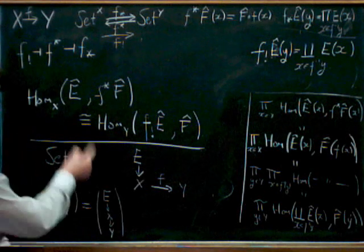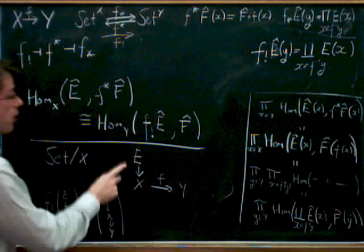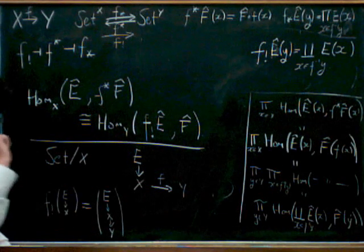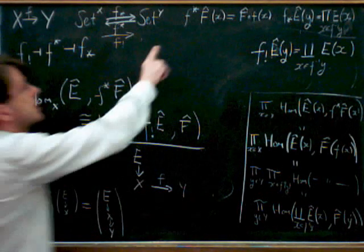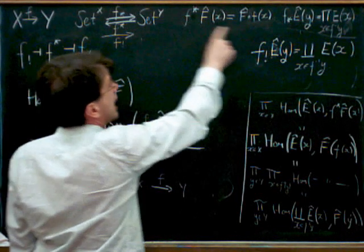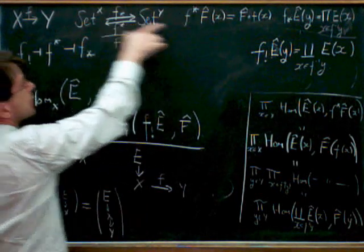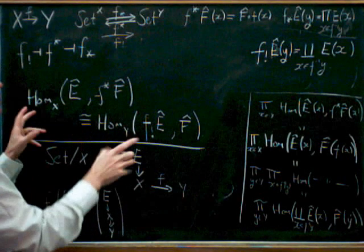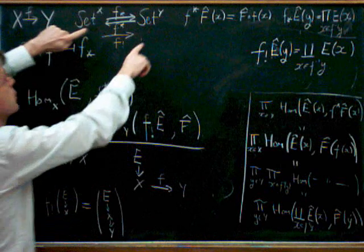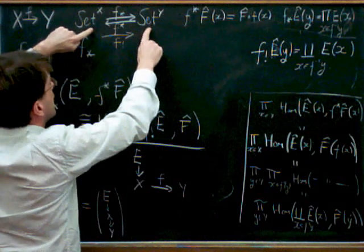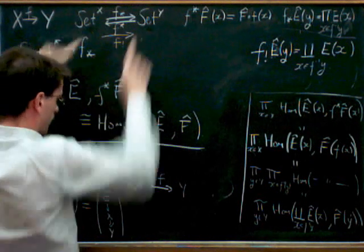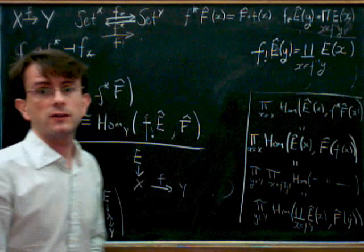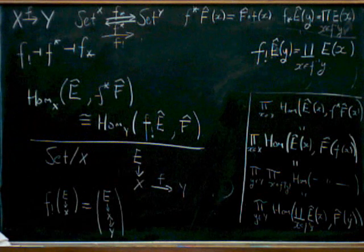So in this version of bundles where we look at maps rather than the fibers, the F shriek is just composition, which is slightly confusing because the pullback along F in this other way of describing them was got by composition. So you should be careful when you're talking about bundles, whether you're talking about them via the fibers or via the fibrations. Okay, so that's all I wanted to say. Thank you.